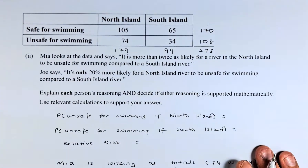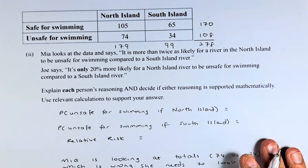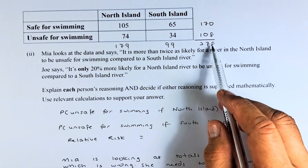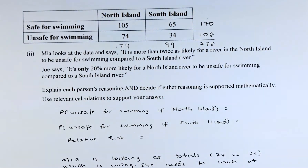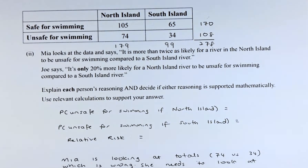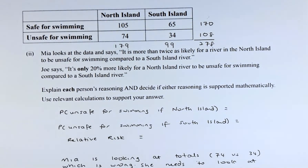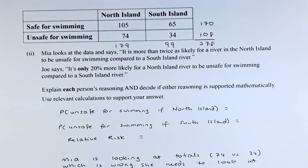Let's look at part two. The table is the same, with row totals, column totals, and the overall total of 278 rivers. Mia looks at the data and says it is more than twice as likely for a North Island river to be unsafe for swimming compared to a South Island river. Joe says it is only 20% more likely for a North Island river to be unsafe compared to a South Island river. Explain each person's reasoning and decide if either is supported mathematically, using relevant calculations.